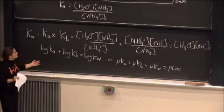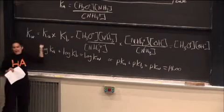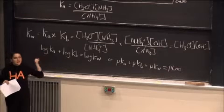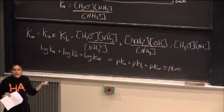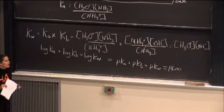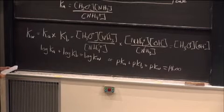And the thing about these problems is if you're given a ka for an acid, you can calculate the kb for its conjugate base. And you'll be doing that a lot in titration problems that are coming up.